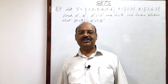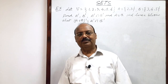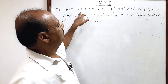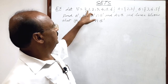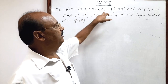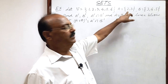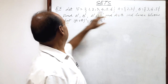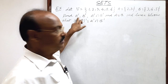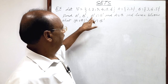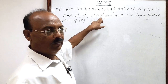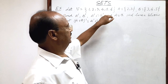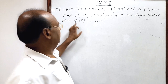Welcome students. Let us see a very interesting and important question from the chapter Sets. The universal set U has elements {1, 2, 3, 4, 5, 6}, set A has elements {2, 3}, and set B has elements {3, 4, 5}. We have to find A complement, B complement, A complement intersection B complement, and A union B.